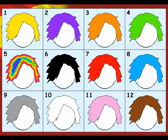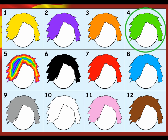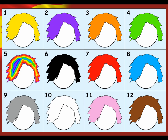Tengo el pelo marrón — number twelve. Tengo el pelo gris — number nine. Tengo el pelo verde — number four. Tengo el pelo multicolor — number five. And there's one left: Tengo el pelo blanco — number ten.